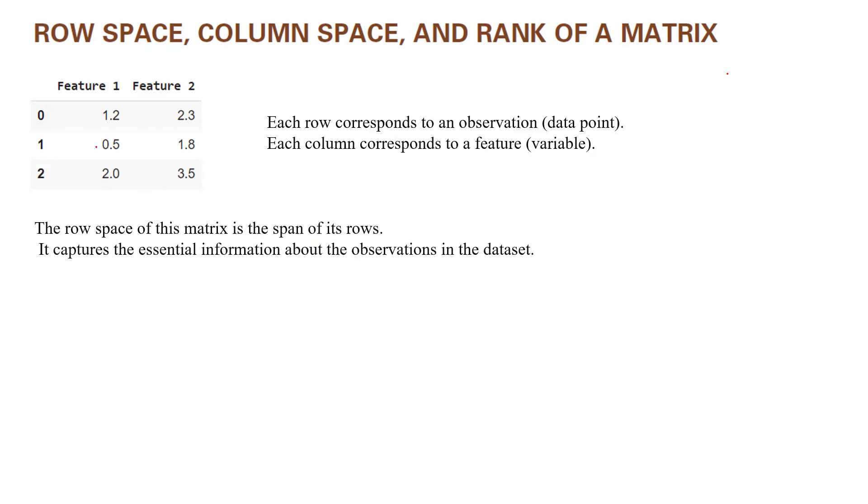The row space of the matrix is the span of its rows. So since you have one, two, three rows, you might say you have three rows that span the row space. We're going to check this later and analyze it in more detail. It captures the essential information about the observations in the data set, the row space.